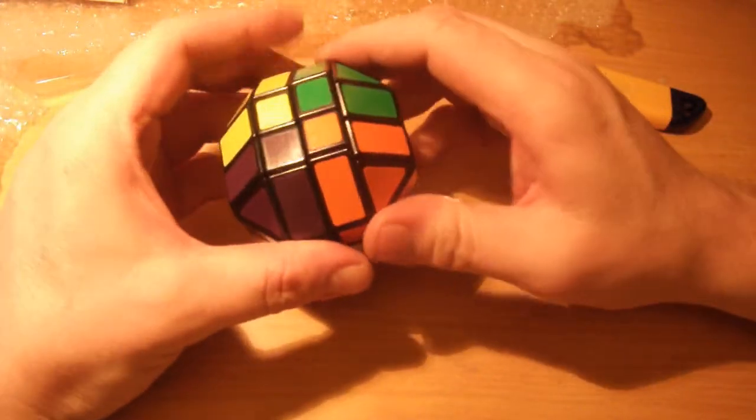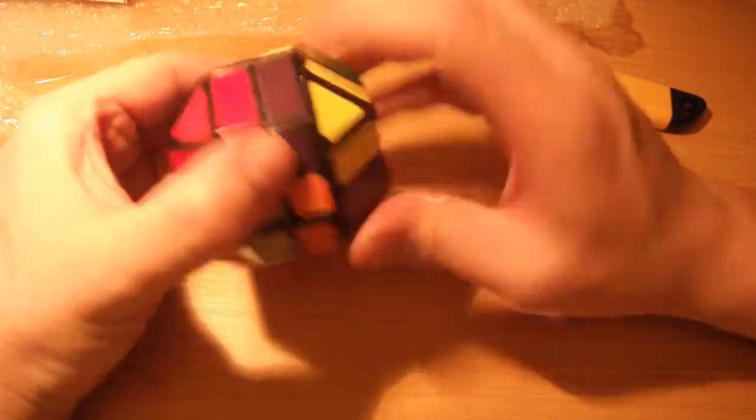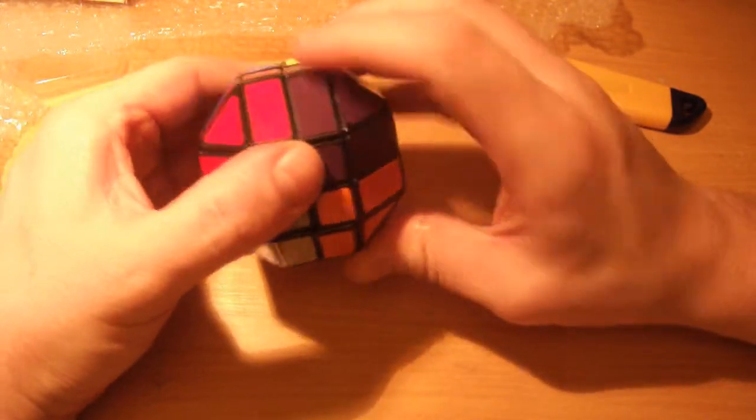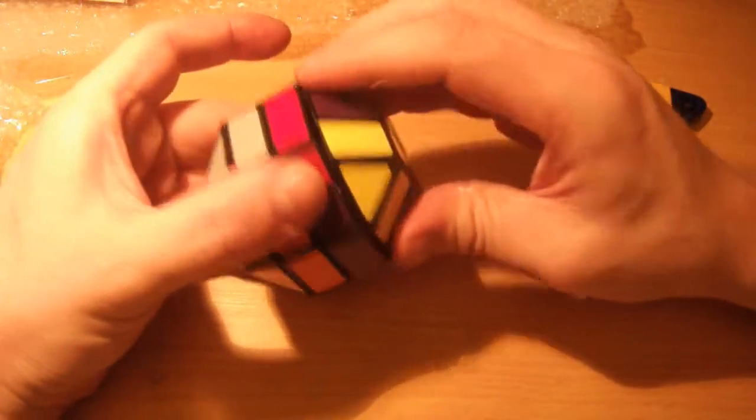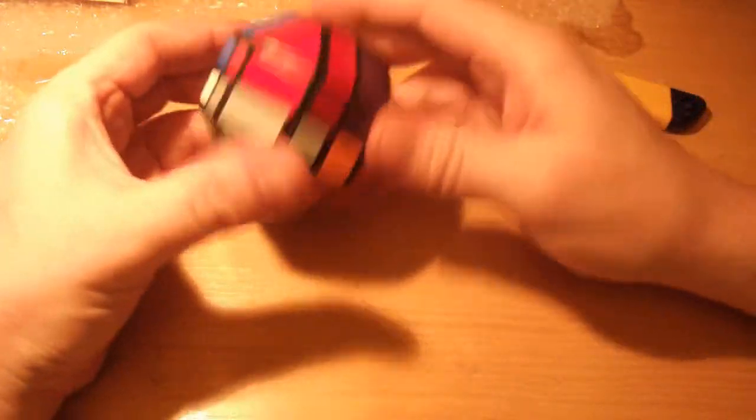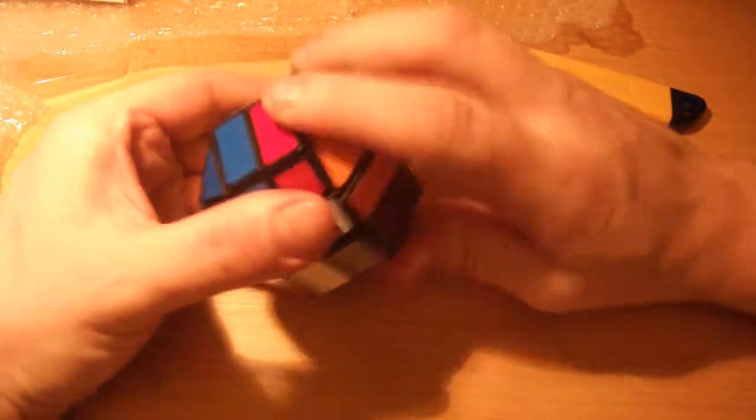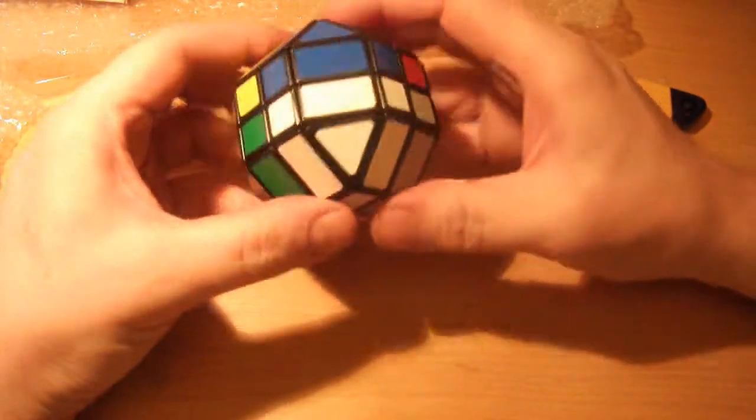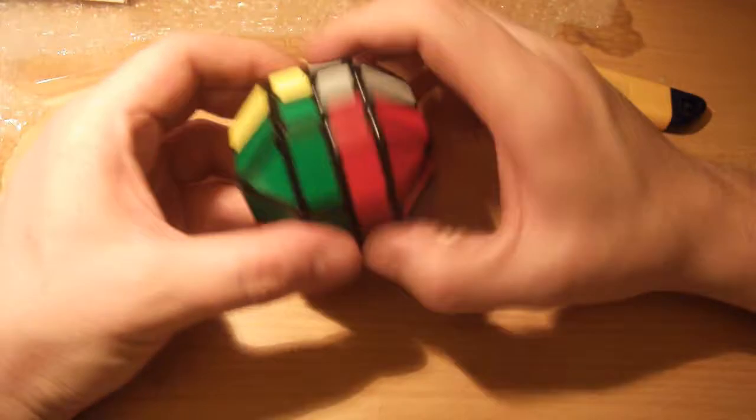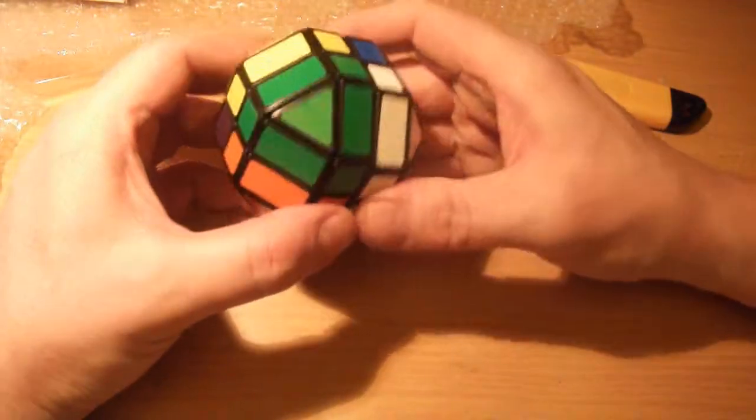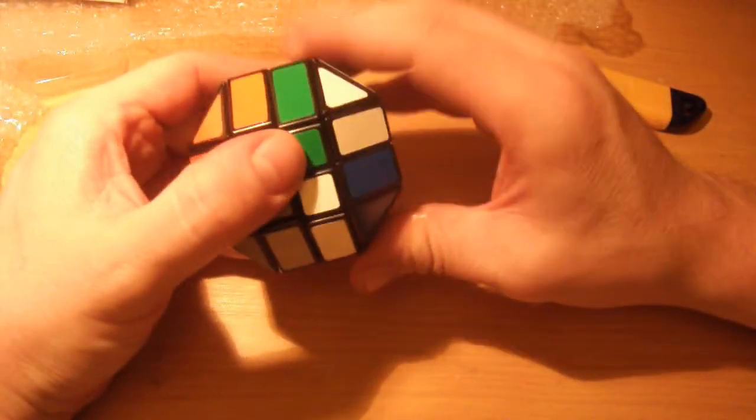This is one of the puzzles I've wanted for quite some time. I've got lots of shape mods, most of them are 3x3, but I wanted to collect all the mass produced 4x4 shape mods that are out there, and obviously this is one of those. Quite a few of them have different stickering that makes them a bit more challenging than just a regular shape mod would be.